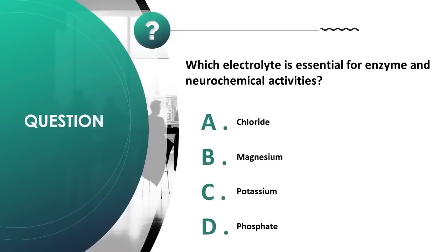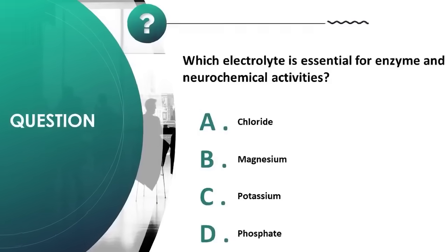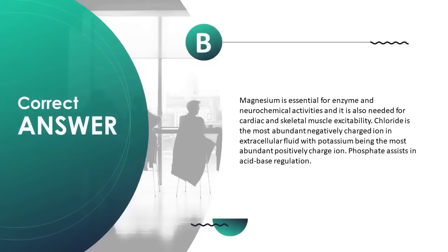Which electrolyte is essential for enzyme and neurochemical activities? A) chloride, B) magnesium, C) potassium, D) phosphate. Correct answer is B. Magnesium is essential for enzyme and neurochemical activities and is also needed for cardiac and skeletal muscle excitability. Chloride is the most abundant negatively charged ion in extracellular fluid, with potassium being the most abundant positively charged ion. Phosphate assists in acid-base regulation.